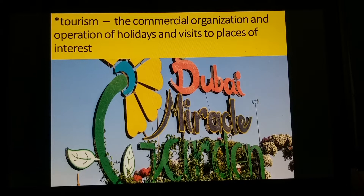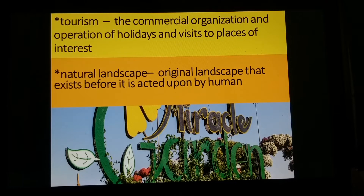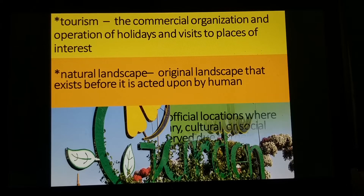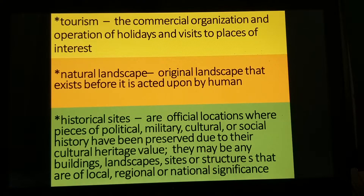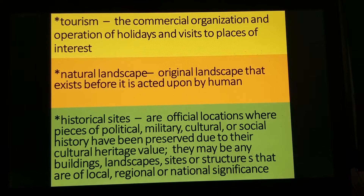Natural landscape is an original landscape that exists before it is acted upon by humans. Historical sites are official locations where pieces of political, military, cultural, or social history have been preserved due to their cultural heritage value. There may be any buildings, landscapes, sites, or structures that are of local, regional, or national significance.